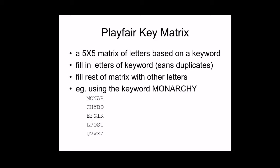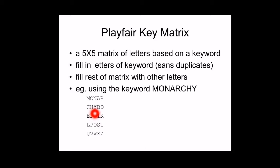The Playfair cipher uses a key matrix, which is a 5x5 matrix containing 25 characters. Since the alphabet has 26 letters, I and J are placed in a single position. The keyword used here is 'monarchy' — M-O-N-A-R-C-H-Y — which is placed first in the matrix. Then the remaining alphabets not present in the keyword fill the rest.